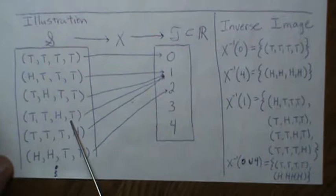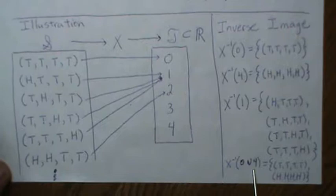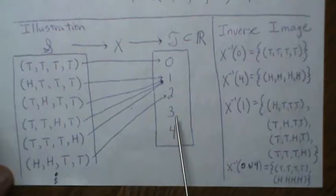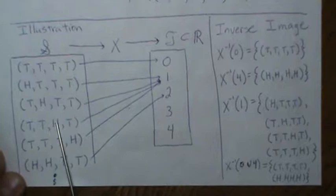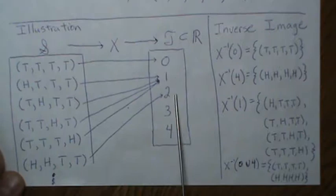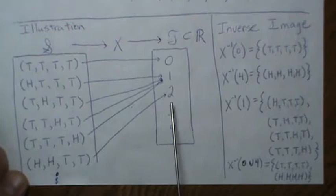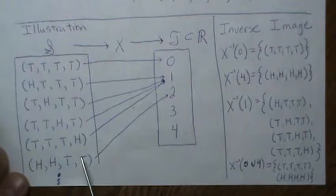We can also talk about unions: the inverse image of {0 ∪ 4} asks what elements here get mapped to zero or four — it's these two elements. That gives you an idea of what we're going to discuss. We have elements in our sample space mapped to the real number line through X, and we can also talk about the inverse image of those elements. So let's jump in.